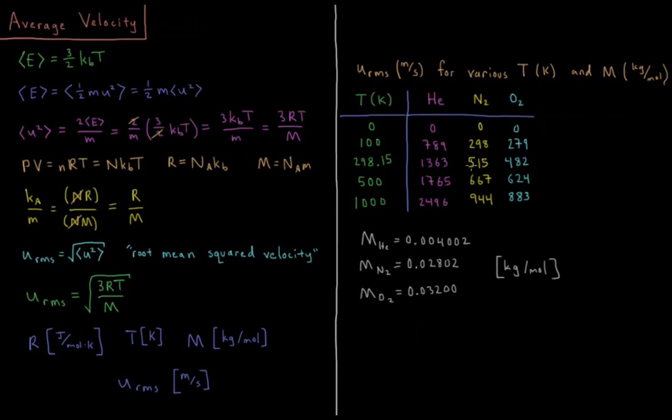So the nitrogen gas every individual second is moving about 500 meters, so every two seconds moving a kilometer. Now that's very, very fast. We don't feel the air moving that fast past us because the particles aren't displacing all in the same direction.